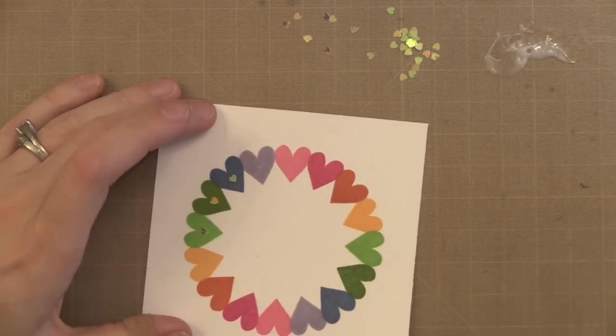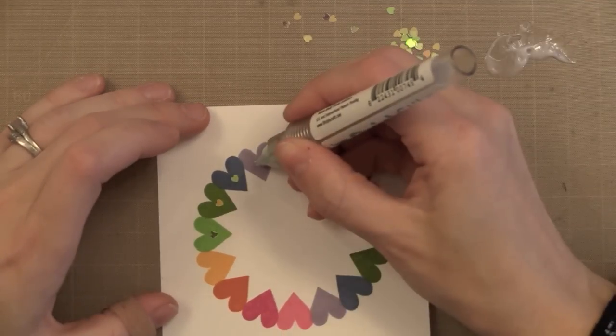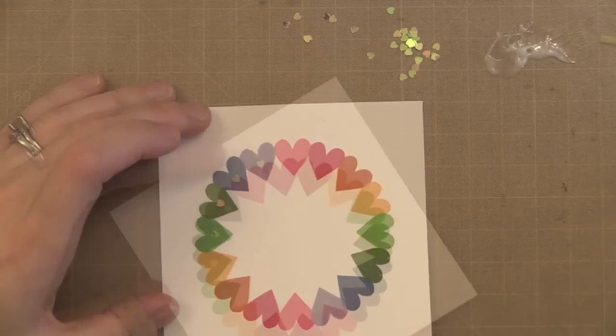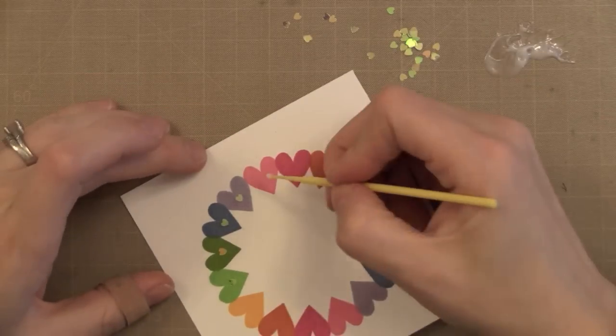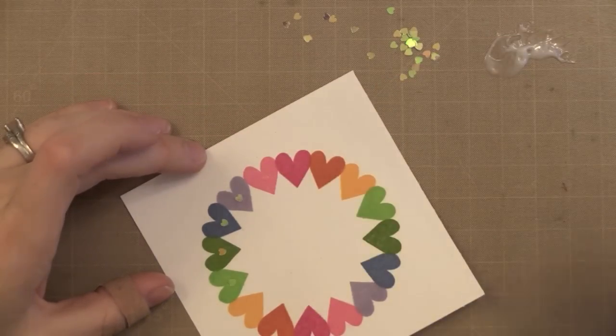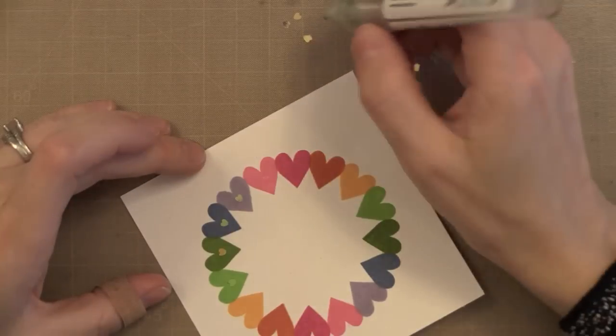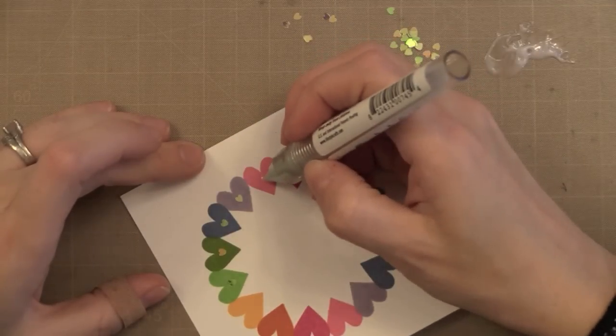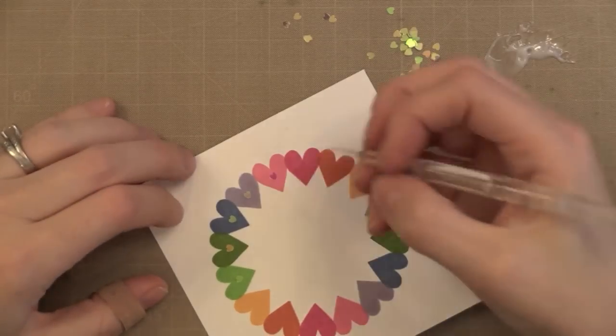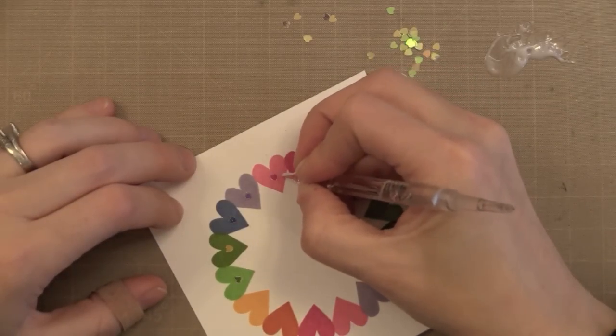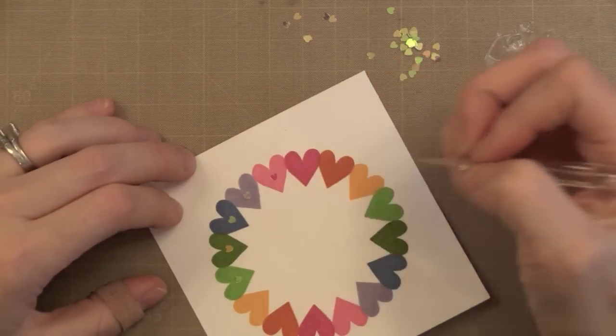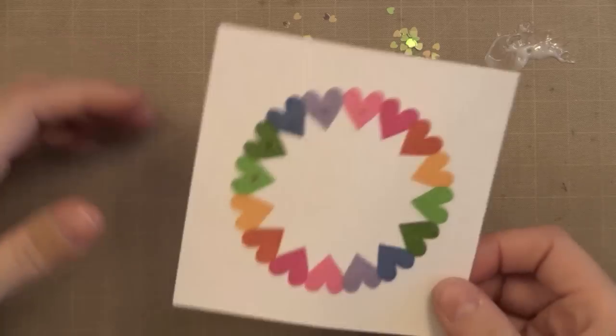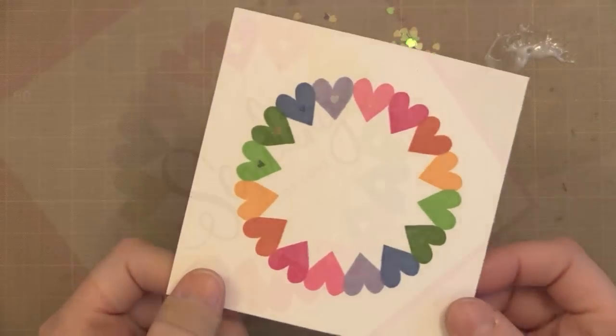It really doesn't take that long to add this tiny little heart into the center of each of the stamped hearts. What's great about this glitter is it's kind of iridescent so it picks up whatever color is behind it. So the little heart on the pink heart looks pink. The little heart on the purple heart looks purple. It's just something fun to add to the center. Another option here would be to stamp an even tinier heart on top with a slightly darker color.